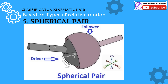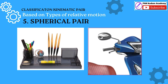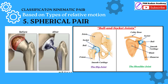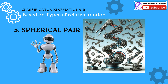Spherical Pair: A spherical pair is a type of kinematic pair that enables rotational motion in any direction around a common center. It consists of a ball-shaped driver and a socket-shaped follower, allowing three degrees of rotational freedom. Examples include ball and socket joints, pen-stand mirror attachments on two-wheelers, and the human hip or shoulder joint — nowadays these joints may be replaced surgically with artificial joints, most commonly hips, knees, and shoulders — providing flexibility and range of motion in various mechanical systems and robotics applications.